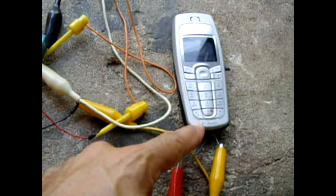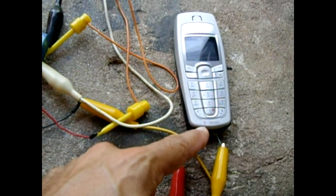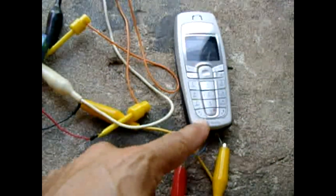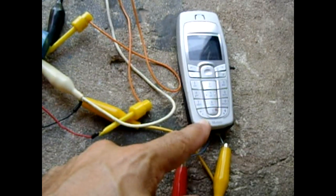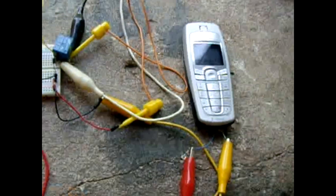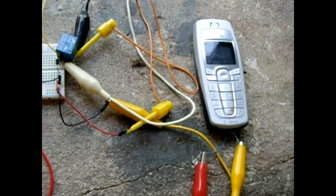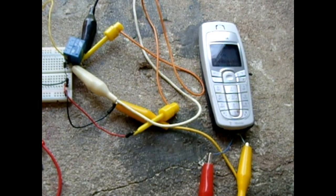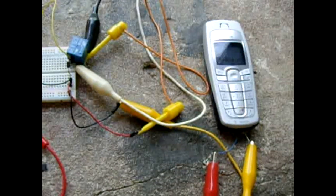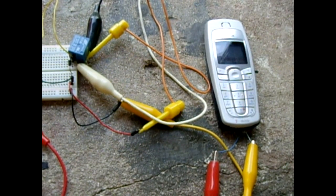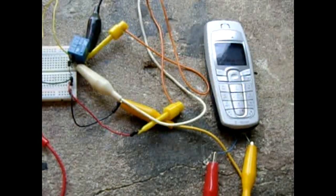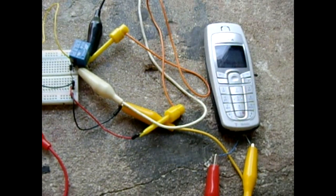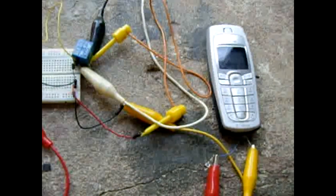Once you locate that part, you're going to solder on two wires to the connections of the vibration motor. Once that stage is completed, you're going to connect up a digital multimeter to the leads leaving the vibration motor, and you're going to reassemble your phone. You're going to call your phone and make sure it's on vibration mode.